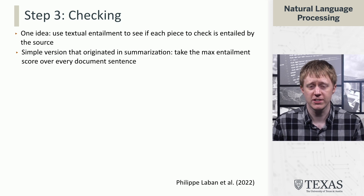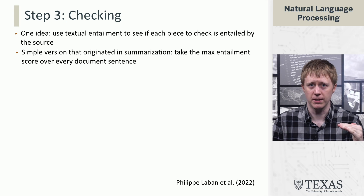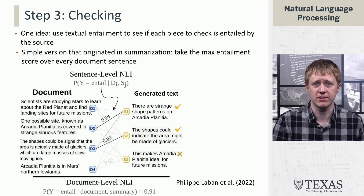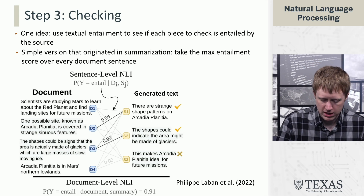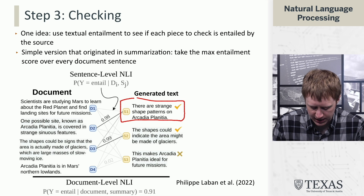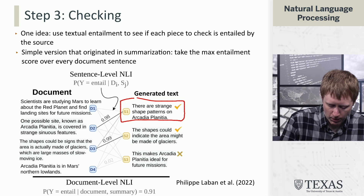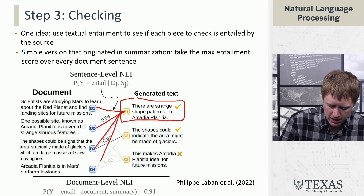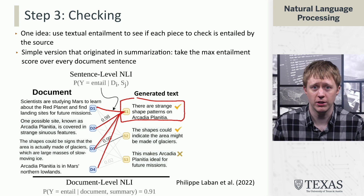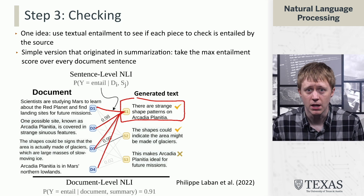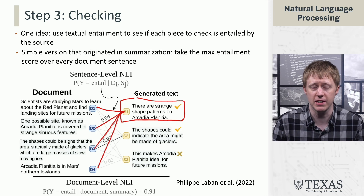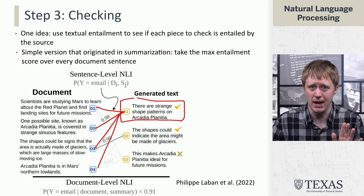One way to do this is: if you've got a whole bunch of sentences in a document and a sentence-level entailment system, look at our sentence and then everything in this document and take a max over those entailment scores. Concretely, if we're trying to check a piece like 'there are strange shape patterns on Arcadia Planitia,' we need to look at its entailment score with every sentence in the source document — does one of those sentences support this generated claim? We compute those sentence-level entailment probabilities and take a max. We can also use document-level entailment systems, which dispense with the sentence-level classification and maxing and just run a document-level system.